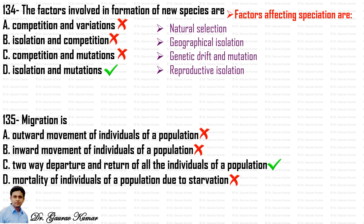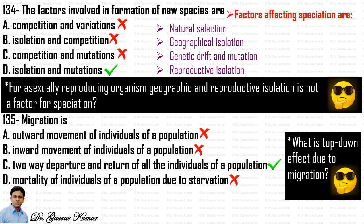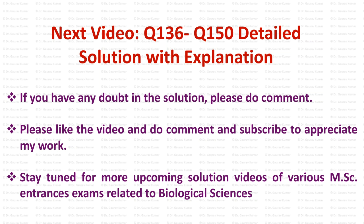For this video, two homework questions: why is geographic and reproductive isolation not a factor for speciation in asexually reproducing organisms? And what is the top-down effect due to migration? Please explore and share your answers in the comments. The next video will cover questions 136 to 150, the last video for the 2014 question paper. Please like, comment, and subscribe for more upcoming MSc entrance exam solution videos.